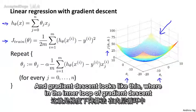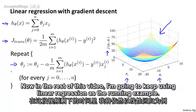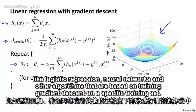Gradient descent looks like this, where in the inner loop you repeatedly update the parameters theta using that expression. I'm going to keep using linear regression as the running example, but the idea of stochastic gradient descent is fully general and also applies to other learning algorithms like logistic regression, neural networks, and other algorithms based on training gradient descent on a specific training set.